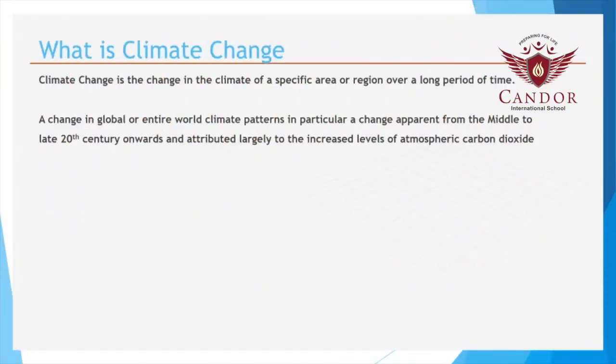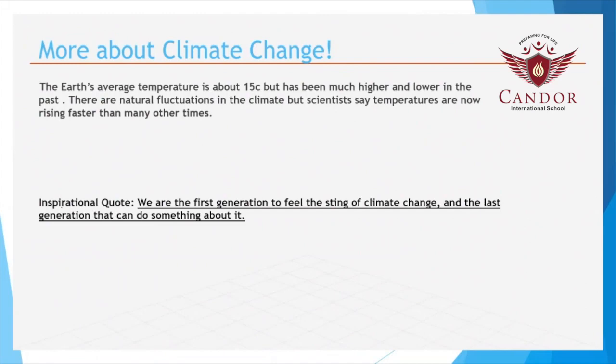What is climate change? Climate change refers to the rise in average temperatures on Earth. Climate change is also called global warming. There are natural fluctuations in the climate, but scientists say temperatures are now rising faster than at many other times.